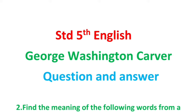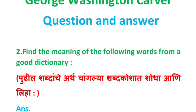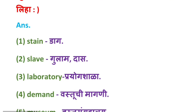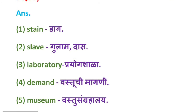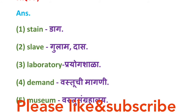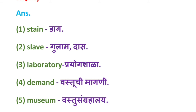Question number 2: Find the meaning of the following words from a good dictionary. Slave means Kulam, Das. Laboratory means Prayokshada. Demand means Vastu Chi Mangani. Museum means Vastu Sanghrahali.